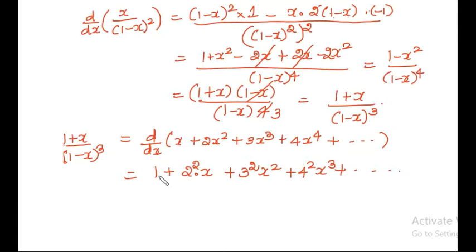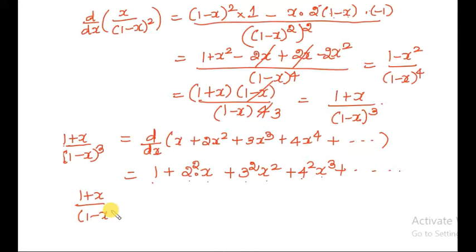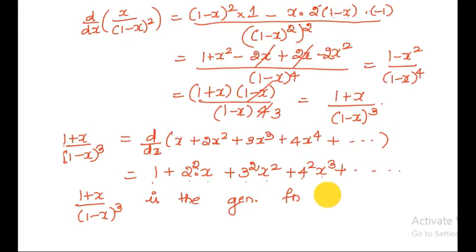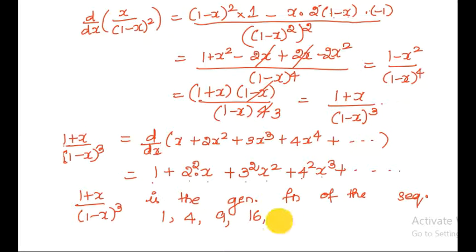So this is a generating function. The function (1 plus x) divided by (1 minus x) whole raised to 3 is the generating function of a sequence. What is the sequence? It is 1, 2 squared equals 4, 3 squared equals 9, 4 squared equals 16, 5 squared equals 25, and so on. So the generating sequence is 1, 4, 9, 16, 25.